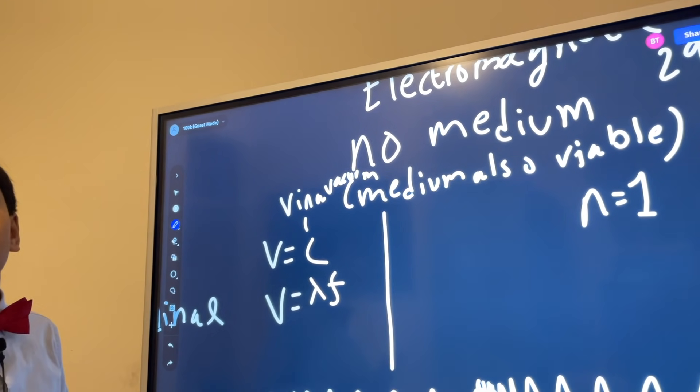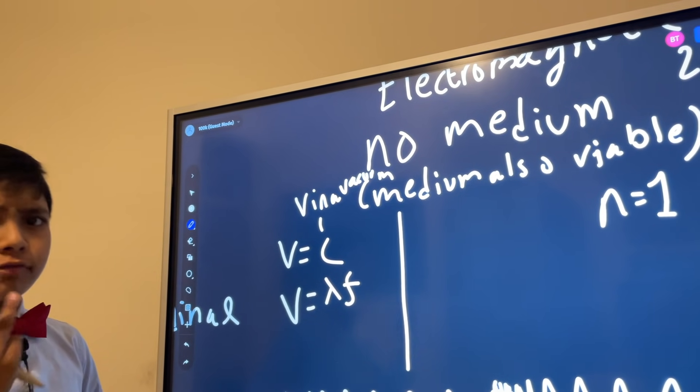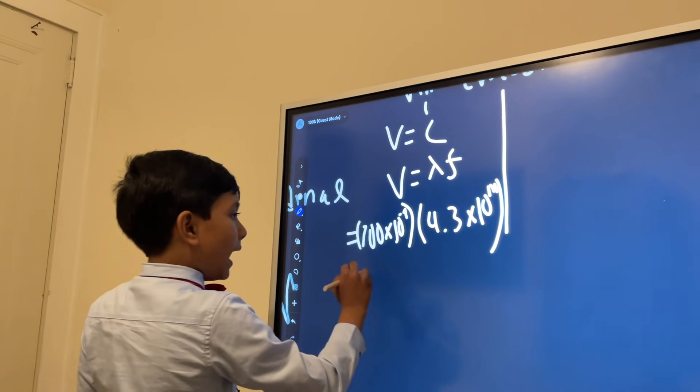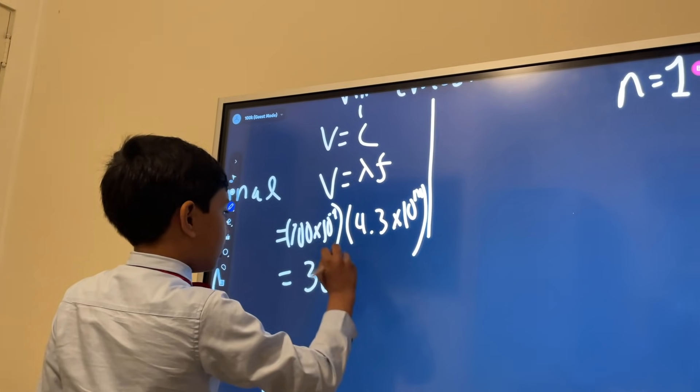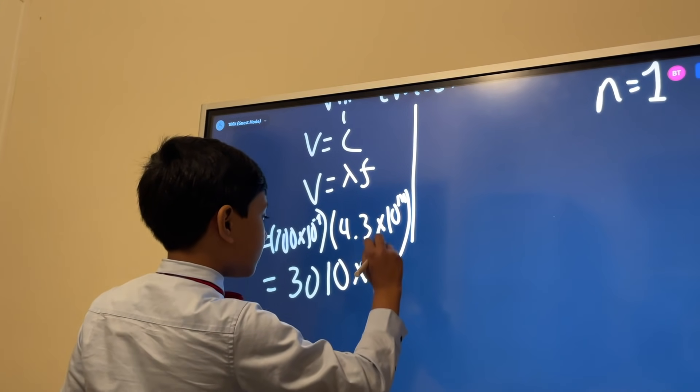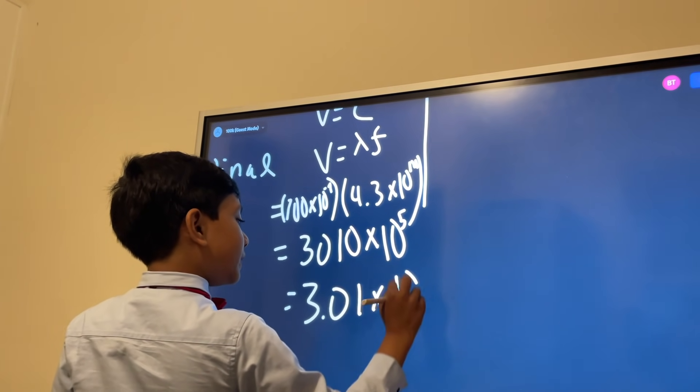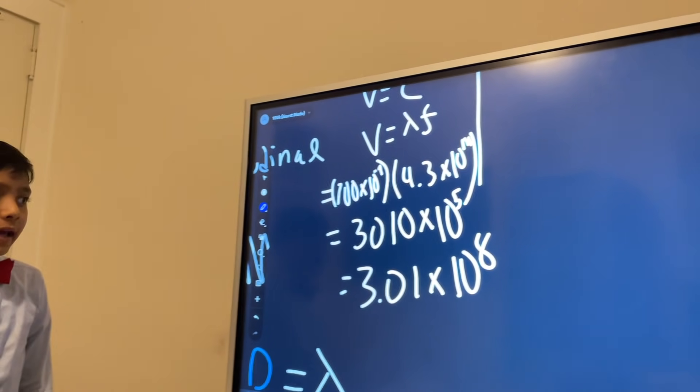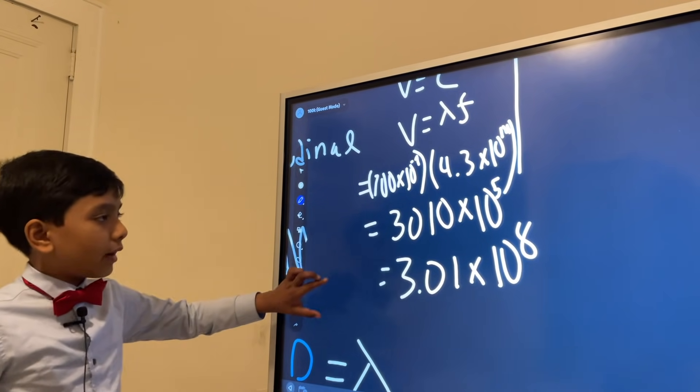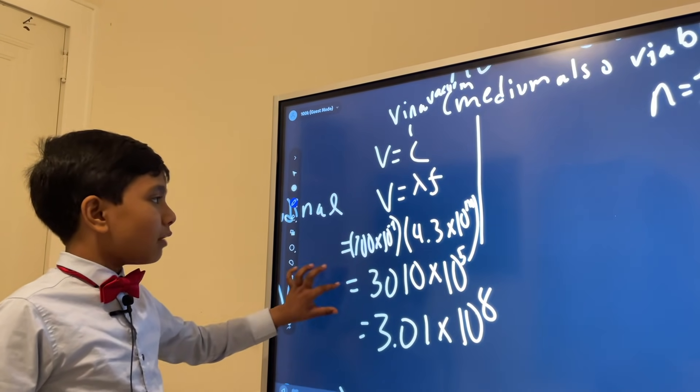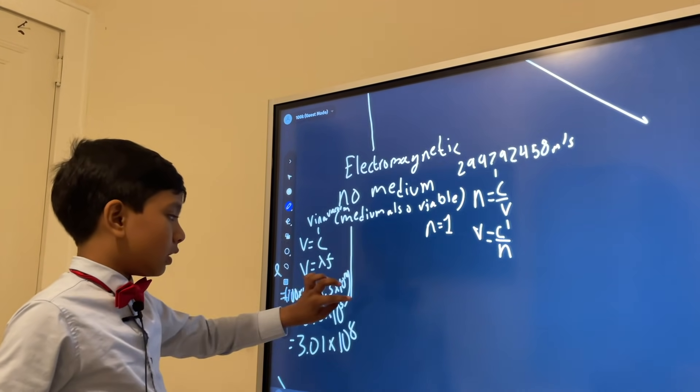But what is lambda and what is F? Well, let's look at red light for example. That's just going to be equal to, well you can do the math, but it's eventually going to equate to around the speed of light, or 3 times 10 to the 8. All right, so that's without a medium, and that's for red light.